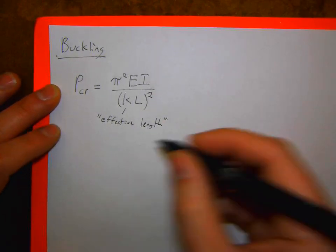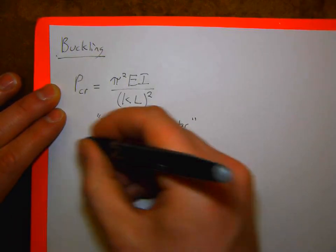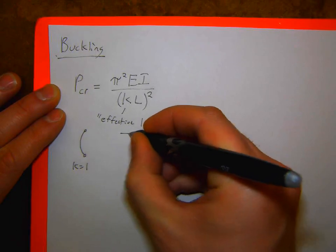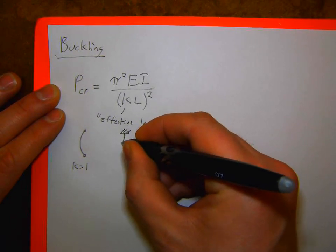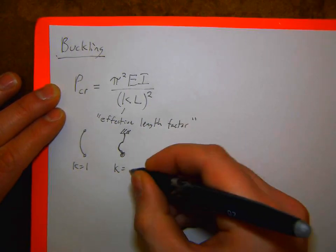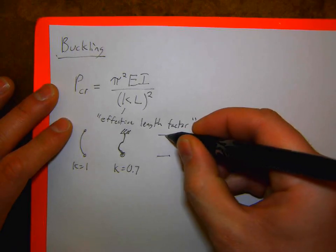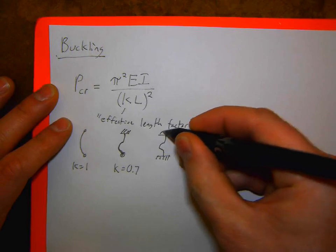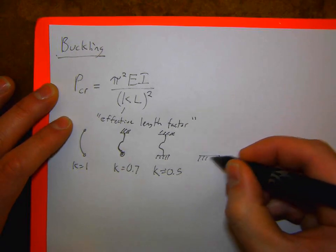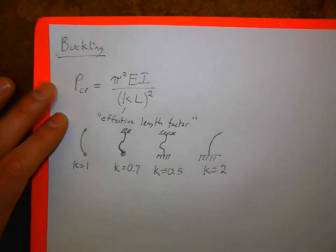For a pinned-pinned beam, K = 1. For a fixed-pinned beam, K ≈ 0.7. For a fixed-fixed beam — which you had in your buckling lab — K = 0.5. For a fixed-free beam, K = 2.